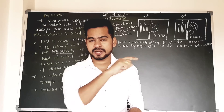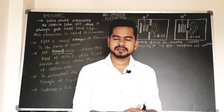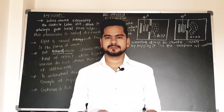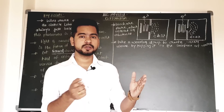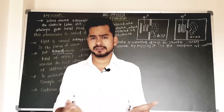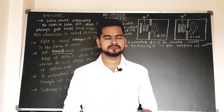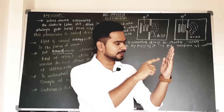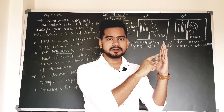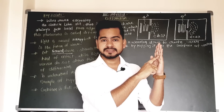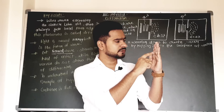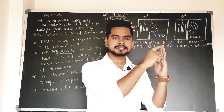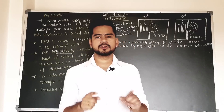Constructive interference produces bright fringes, and destructive interference produces dark fringes. In the previous video, when we discussed Young's double slit experiment, we found that on a screen at the center point we always get a central maximum. Above that, we get bright fringes, then first dark fringes — first maxima, first minima, second maxima, second minima — and we derived the formulas for those.